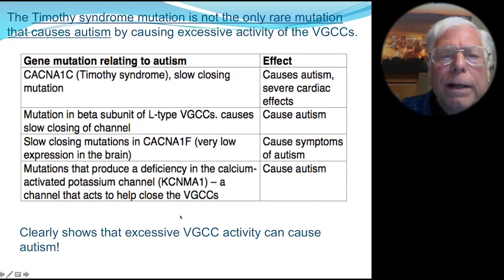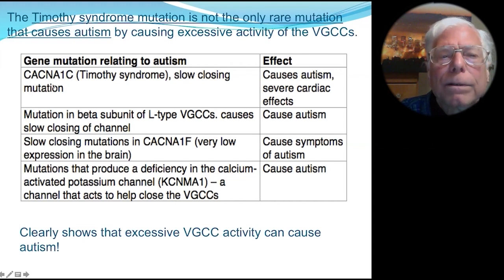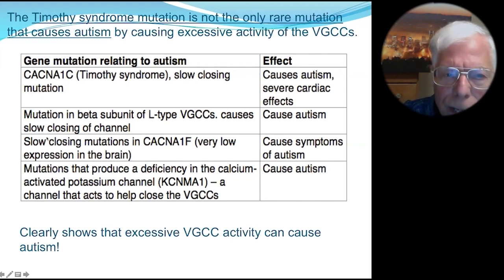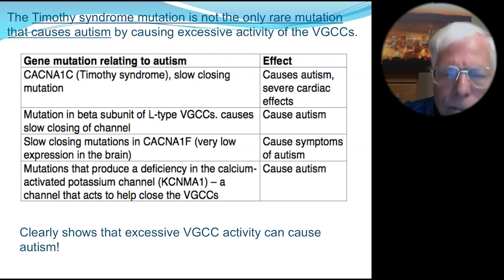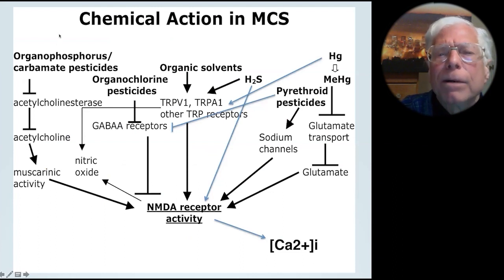There are also genetic polymorphism studies where more modest increases in VGCC activity can cause increased susceptibility to autism. The genetics clearly shows that VGCCs can have roles in causing autism in this way. Now, how do the chemicals work?